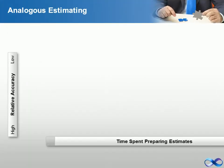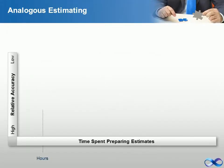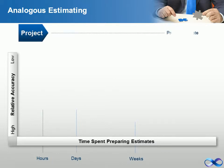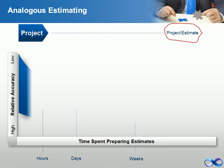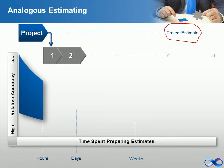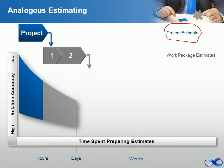Analogous estimating uses a similar past project to estimate the duration or cost of your current project — thus the root of the word, analogy. It is used when there is limited information regarding your current project. An analogous estimate is considered top-down, and is generally not as accurate as other estimating techniques.